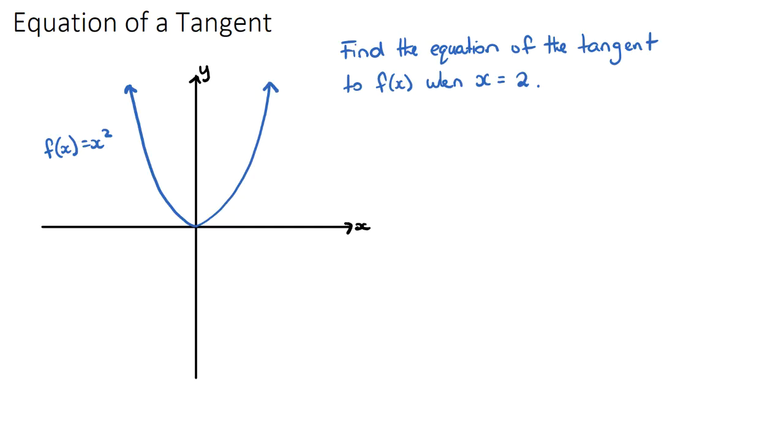The question says find the equation of the tangent to our function f(x) when x is equal to 2. So on our x-axis here, when x is equal to 2, if we go up we can find the y value just by subbing in 2 into our original equation. So f(2) will be 2 squared which is 4.